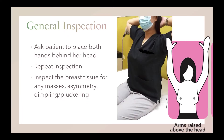Next, ask your patient to place both her hands behind her head, or you can also ask your patient to raise her hands. Repeat the inspection as before, inspecting the breast tissue for any masses, asymmetry, dimpling, or puckering.